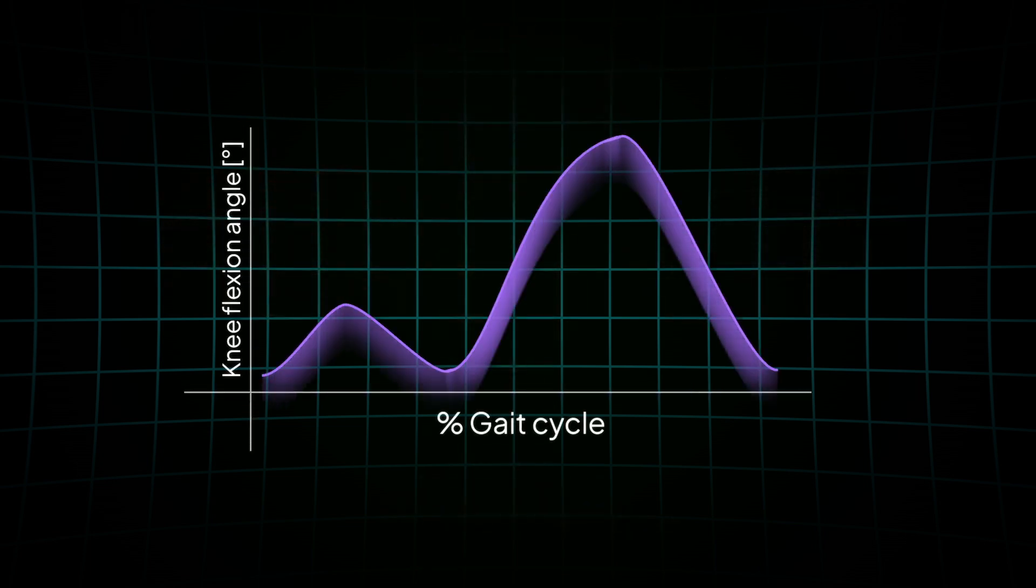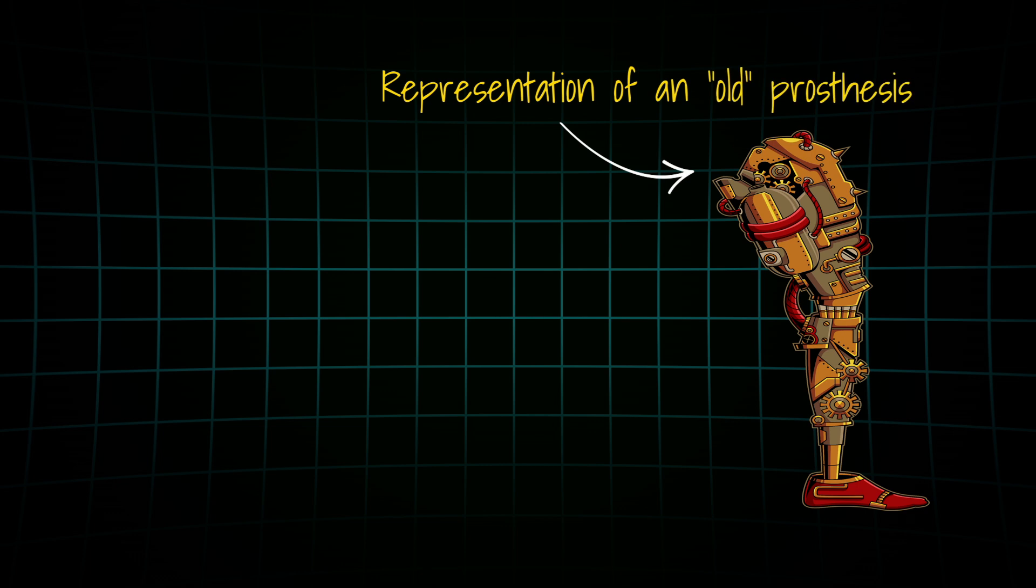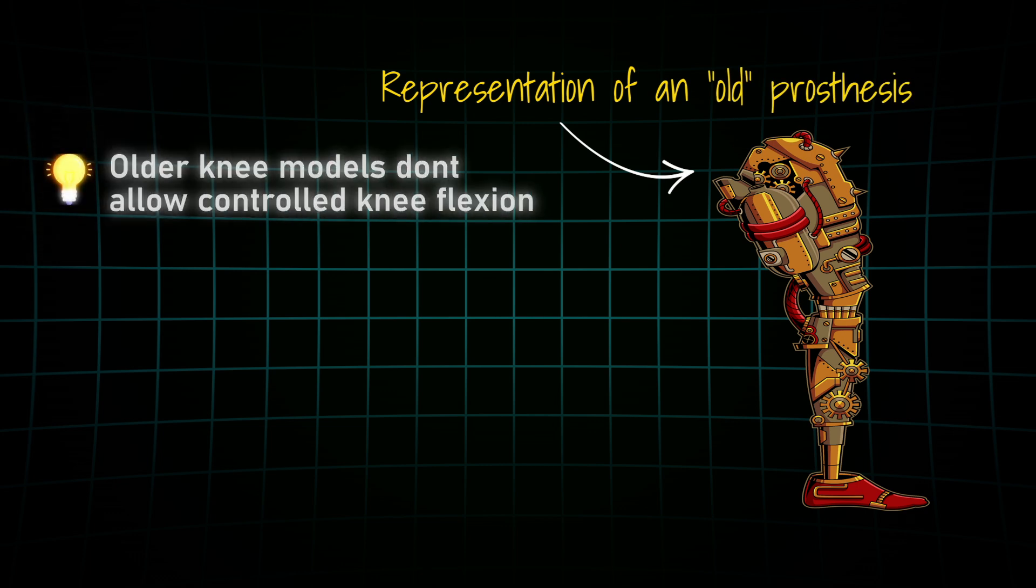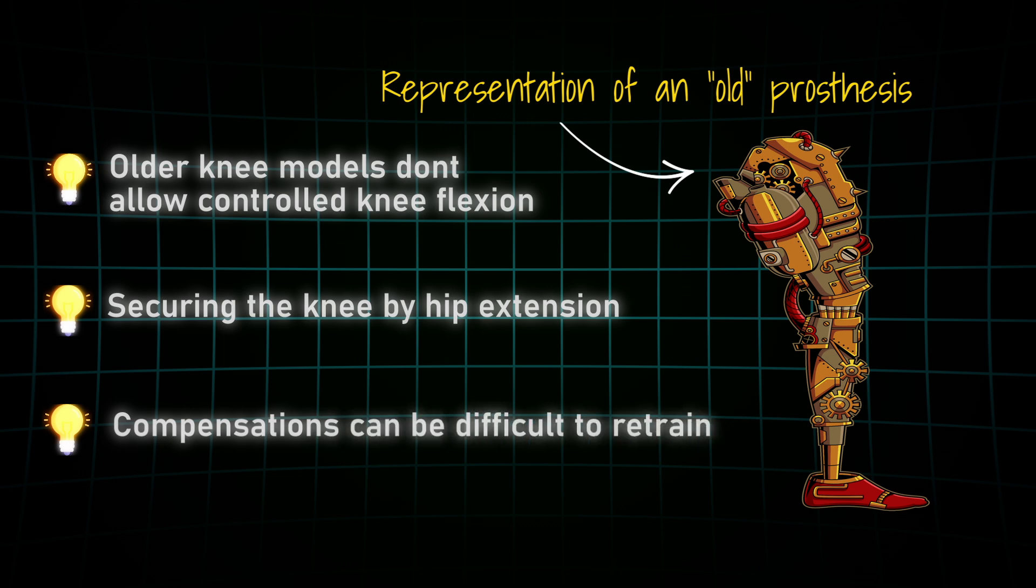Unlike trans-tibial amputees, many trans-femoral users have little or no knee flexion during stance, unless they're using high-end knees. Why? In older designs, bending the prosthetic knee during stance used to mean one thing: falling. To stay safe, users developed compensations like driving the prosthetic foot forcefully into the ground and forcing the hip into extension right at the start of the stance phase. These habits often stick, even when we switch to modern knees.